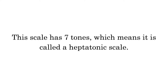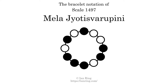This scale has 7 tones, which means it is called a heptatonic scale. This is a bracelet notation diagram of scale 1497. The shaded circles represent tones that appear in the scale, and they are read clockwise, starting at the top.